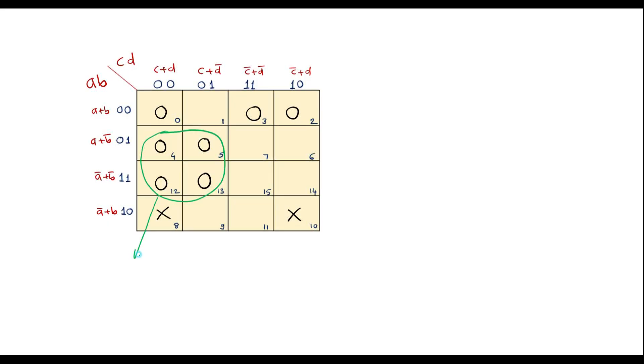So value of this will be, so in these two rows the common factor is b bar and between these two columns common factor is c. That is b bar plus c.